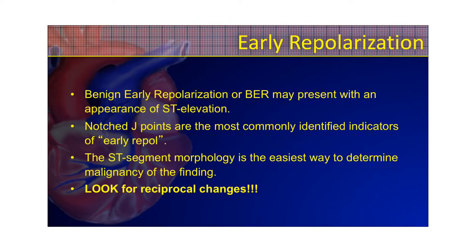One of the indicators is a notched J-point. Sometimes people will say it kind of looks like a fishhook appearance. The ST-segment morphology is the easiest way to determine malignancy of the finding. This is going to have a concave ST-segment as opposed to convex. You draw a straight line from the J-point to the top of the T-wave, and if that ST-segment is below that line, it's concave.